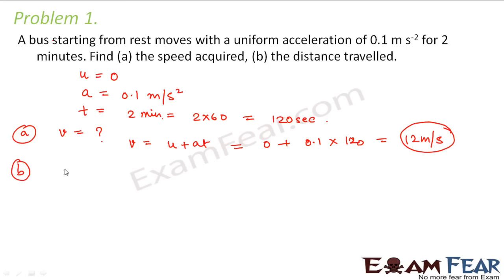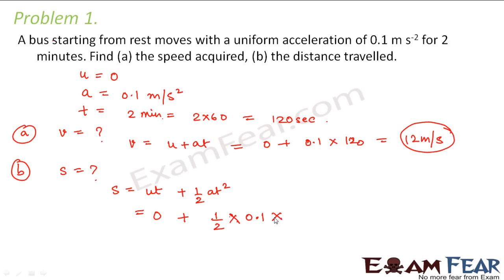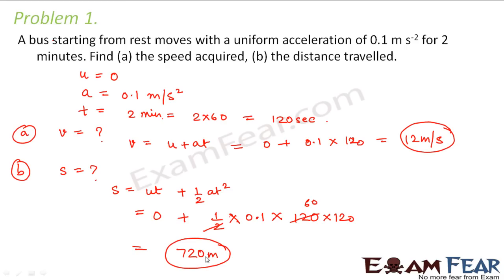For the second part, we calculate the distance traveled. Using S = ut + ½at²: since u = 0, S = 0 + ½ × 0.1 × 120² = ½ × 0.1 × 14400 = 720 meters. So the distance traveled by the bus is 720 meters.